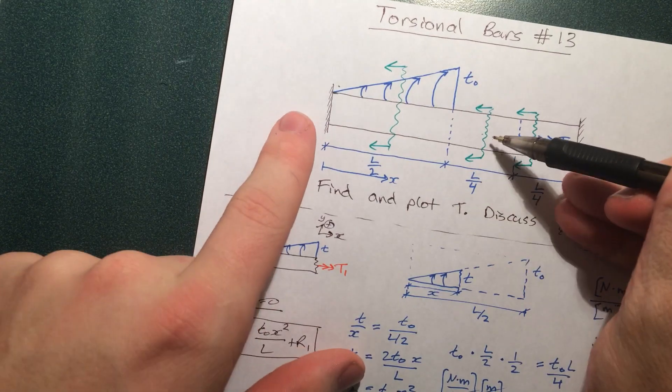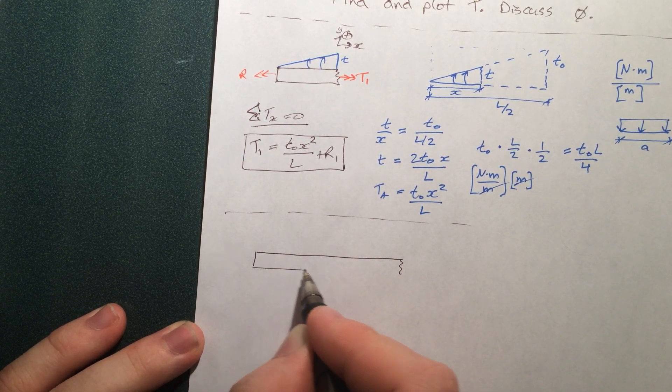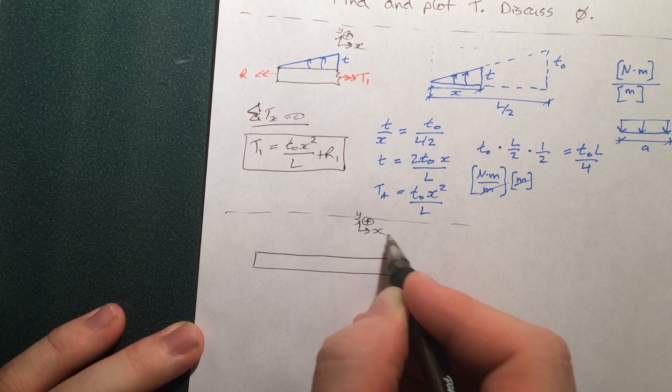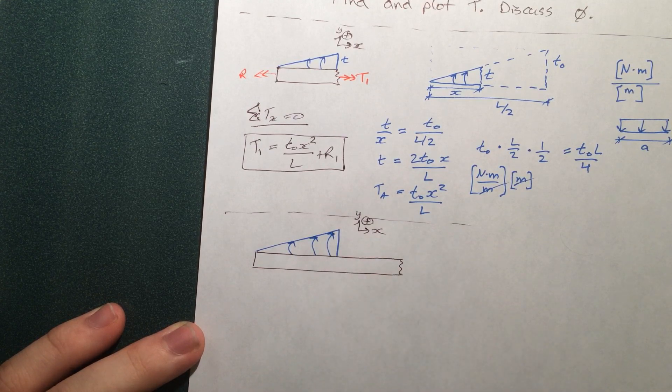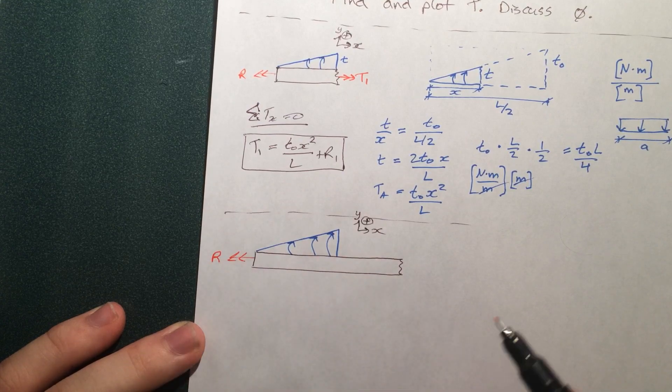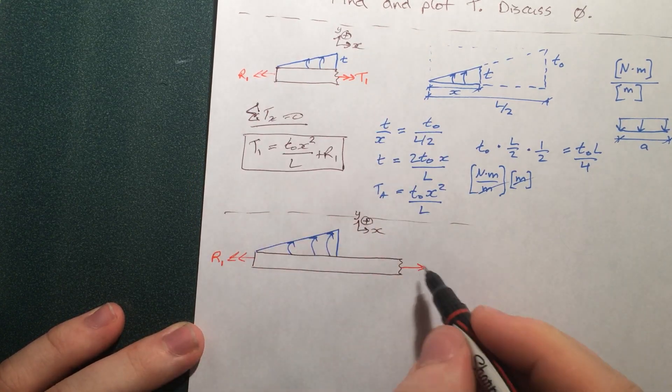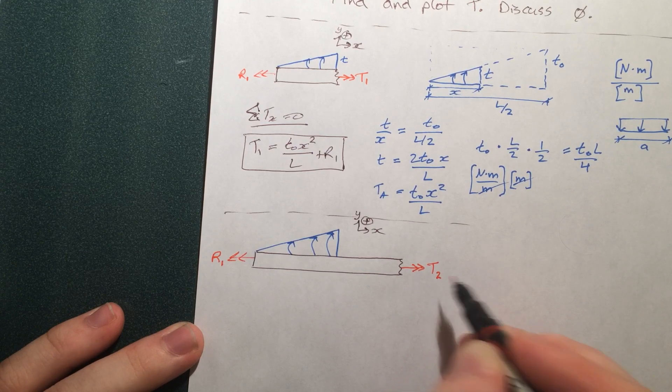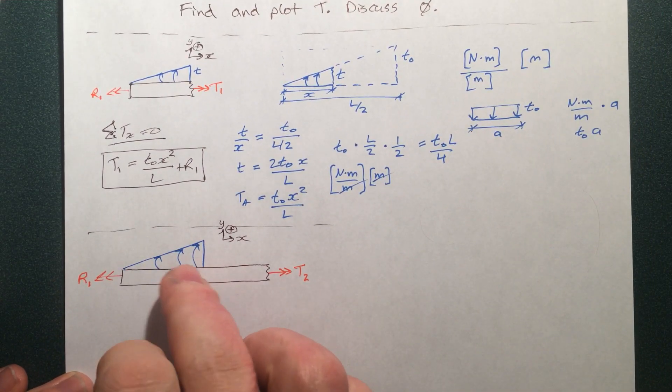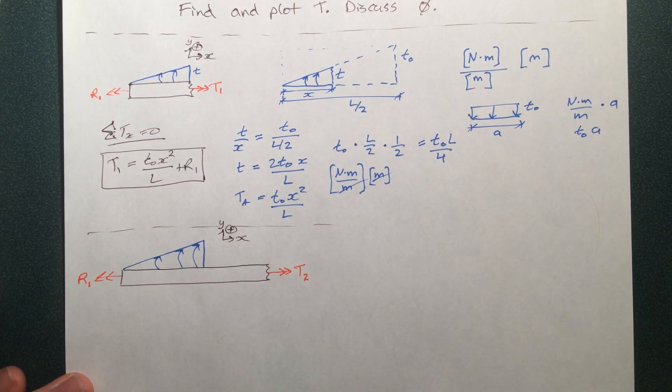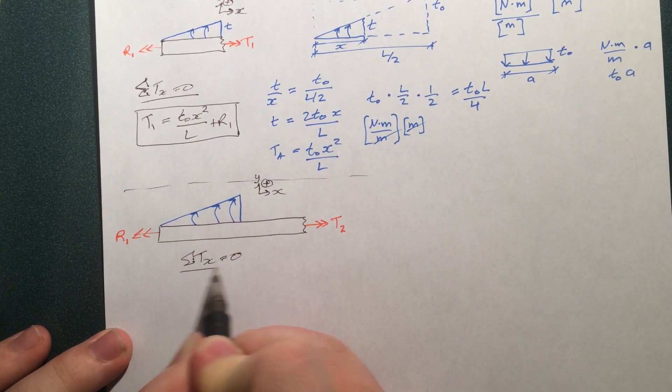Now let's move into the next free body diagram. This piece right here. Now it's got to change. So like I said before, this total distributed triangular torque can just be replaced by a simple point torque, and it has the magnitude T0L by 4. So we can write, if we sum up the torques in the x-direction to be zero, we can write T2.